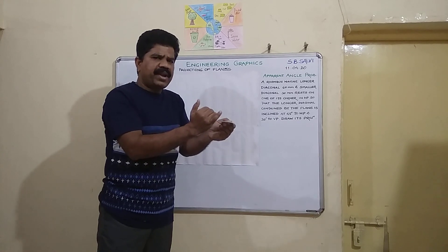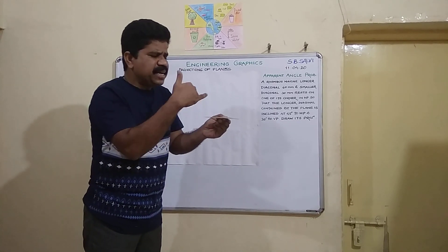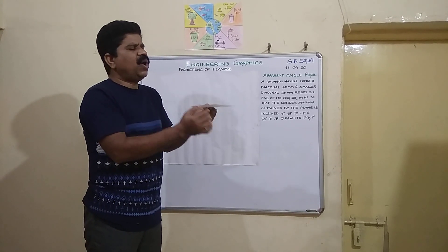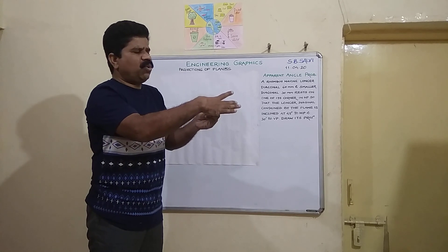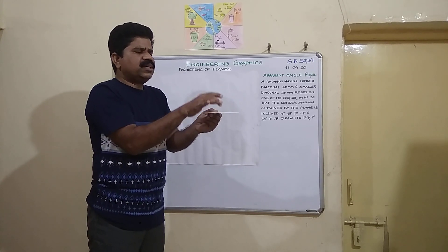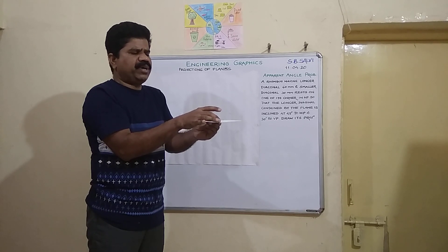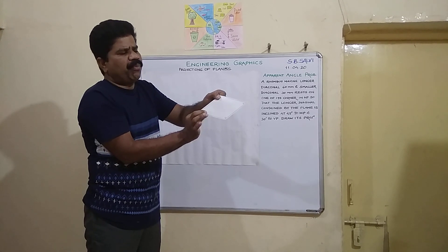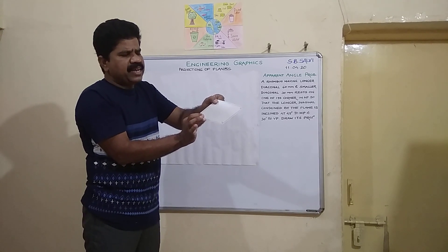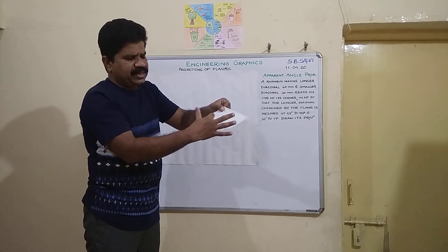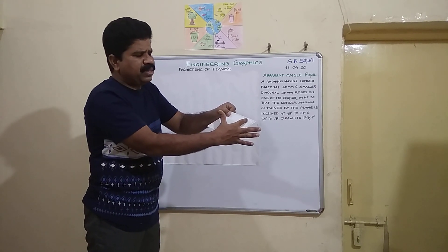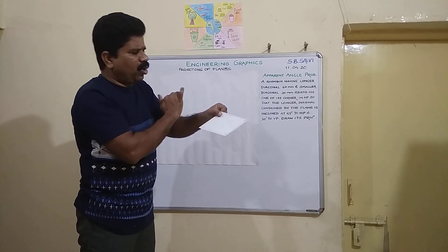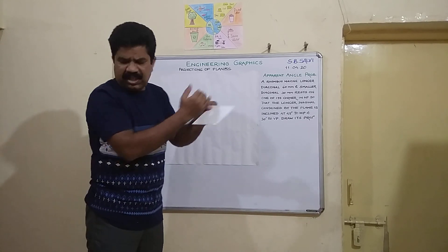The line view develops on XY because the plane is resting in HP. Whenever a plane is in HP, its front view or line view will appear on XY. We will draw the rhombus with longer diagonal and shorter diagonal, and we will proceed through the first stage, second stage, and third stage.